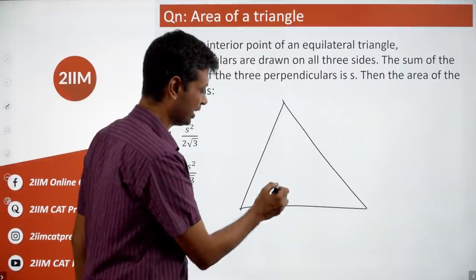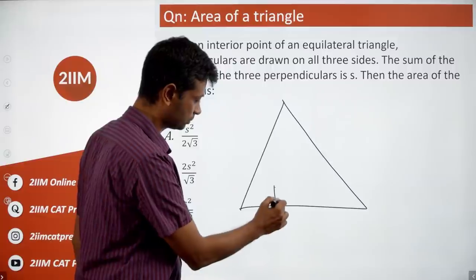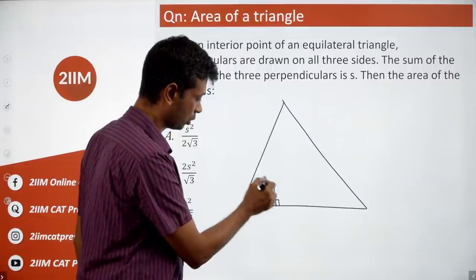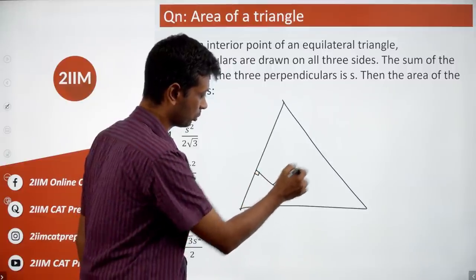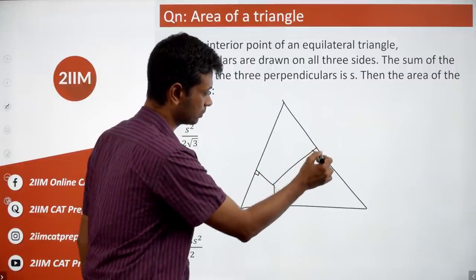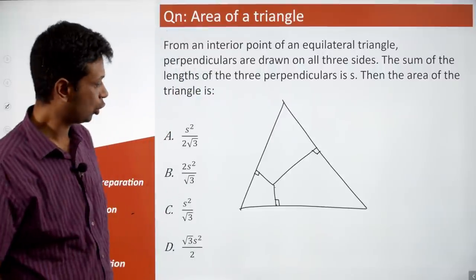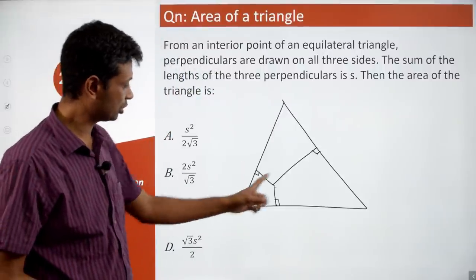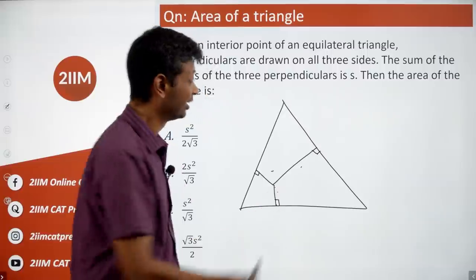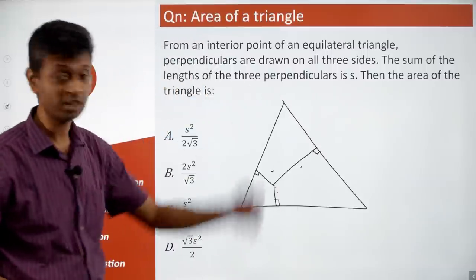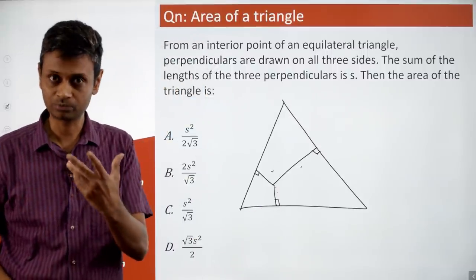Take a point here, dropping a perpendicular to each of the three sides. The question says the sum of those three perpendiculars is a constant for an equilateral triangle.